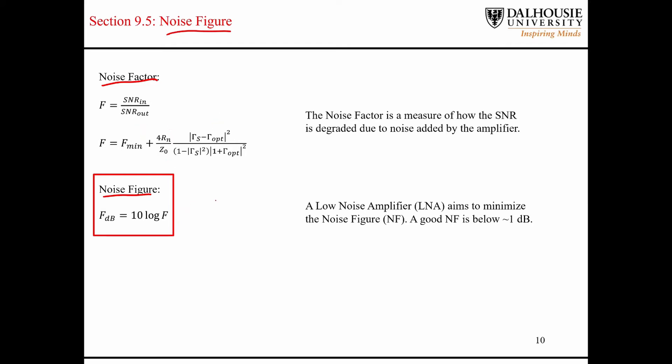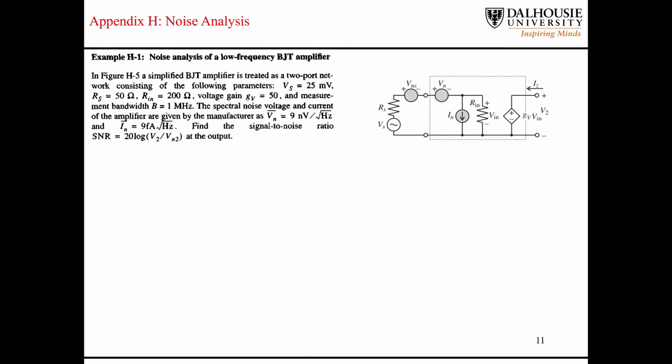But it is much more common for a noise figure to be referenced in terms of dB. And for reference, a good noise figure is somewhere on the order of a dB. I've seen LNAs with noise figures of like a third of a dB. So let's take a quick look at an example from appendix H in the text.